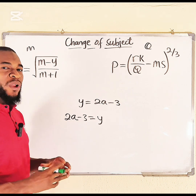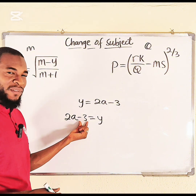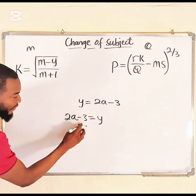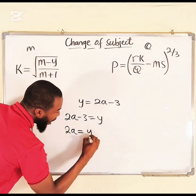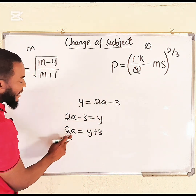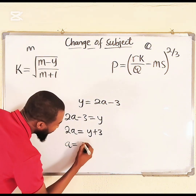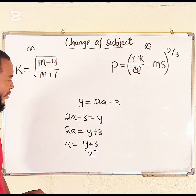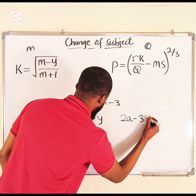Look at what is farther away from a: we have 2 and negative 3. Negative 3 is farther away, so get rid of it first. The inverse of negative 3 is positive 3, so 2a = y + 3. Then since the relationship between 2 and a is multiplication, divide both sides by 2, and hence a = (y + 3) / 2. Now a is the subject.